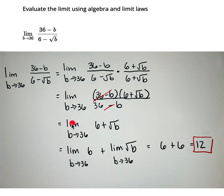I can take the limit as b approaches 36 of a constant which is here this is 6, and when you take the limit of a constant it's just itself, and then when I take the limit as b approaches 36 of the square root of b I can plug that in and use direct substitution.